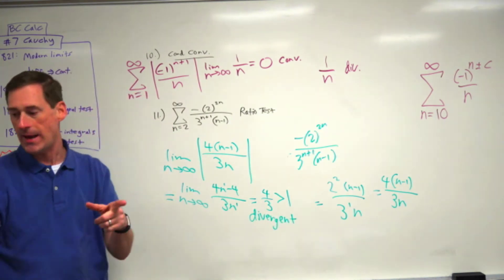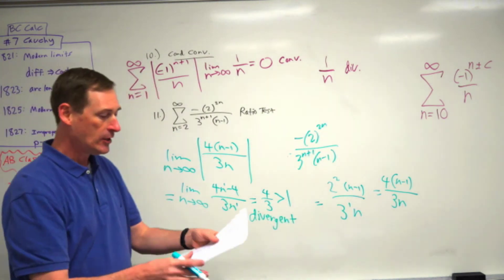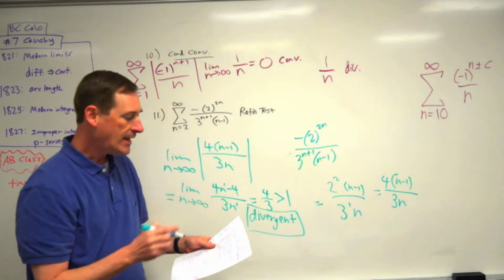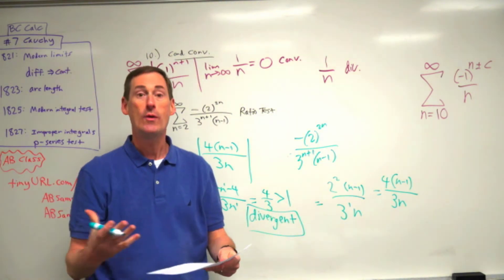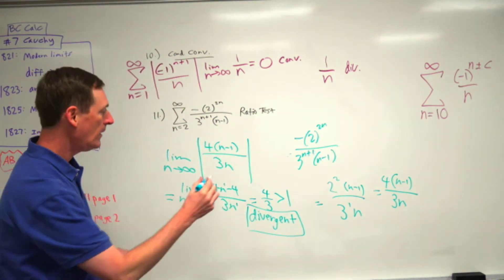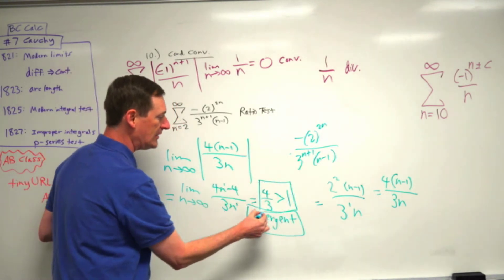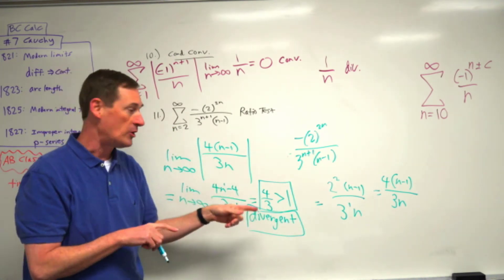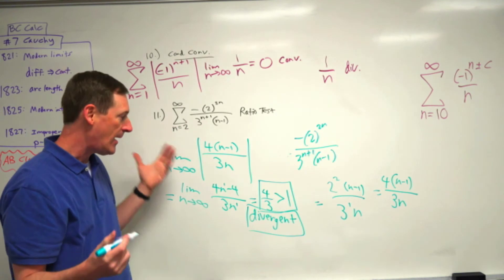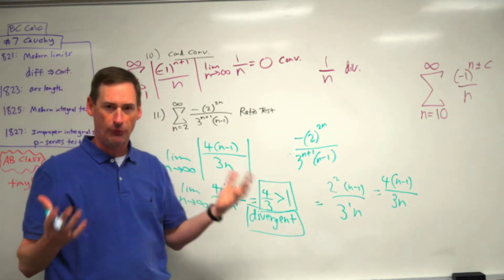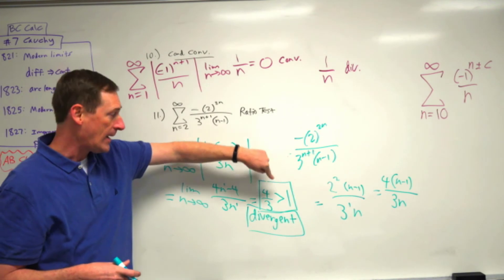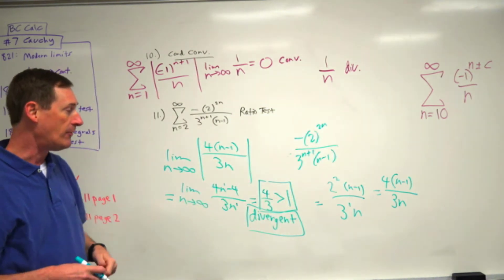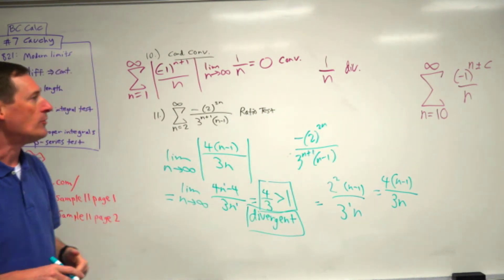This series is divergent. On the sample test, the first box is 'divergent.' The second box says 'because' — you have to say why. Four-thirds is greater than one. If I see four-thirds, I know you did the right thing. Show me you got four-thirds, tell me it's greater than one, and state that it's divergent.